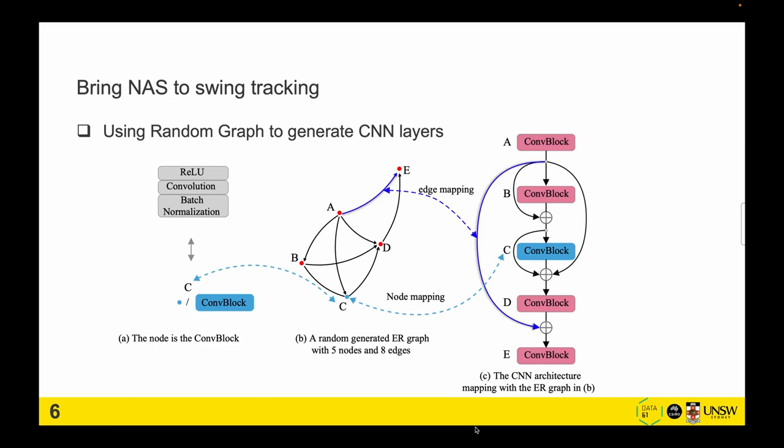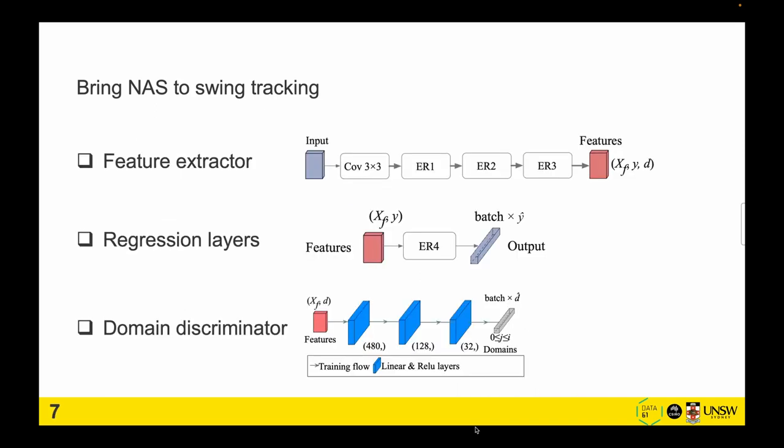We want to bring NAS to swing tracking because NAS has been proven very successful in many other tasks, for example, image classification and semantic segmentation. We're basically using the random graph generator to generate CNN layers. An example is showing that using an Erdős-Rényi graph with five nodes and eight edges can be mapped into a CNN layer that's similar to a residual or ResNet block.